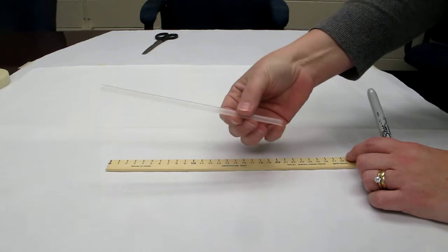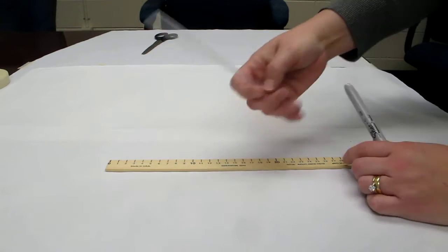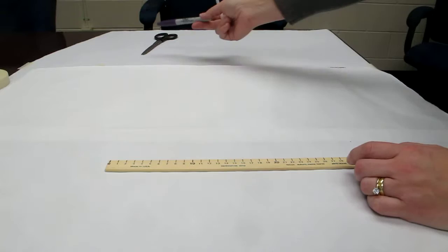You're going to need a ruler, the straws that are not bendable, a permanent marker, and a pair of scissors.